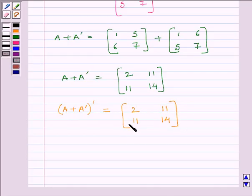Transpose of A plus A transpose can be obtained by interchanging the rows and columns of the matrix A plus A transpose. Here we can see transpose of A plus A transpose is equal to A plus A transpose as the matrices for both are same.